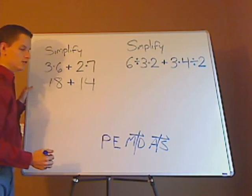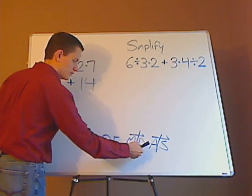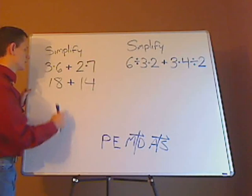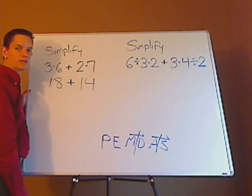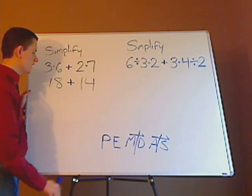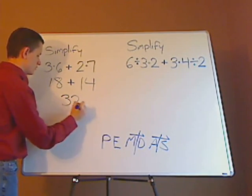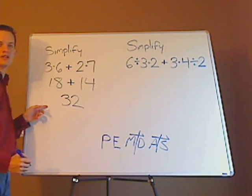The next thing you're going to do, you do the multiplication and division. Then you do addition and subtraction. So you just simply add these. What's 18 plus 14? Yeah, that's right, it's 32. So for the first one, 32 is your answer.